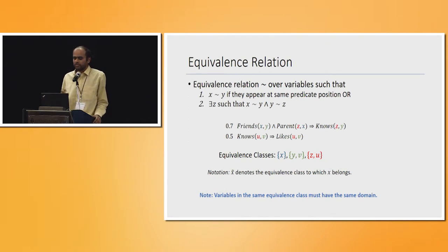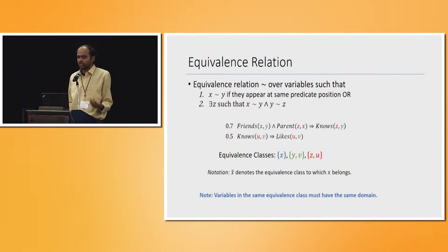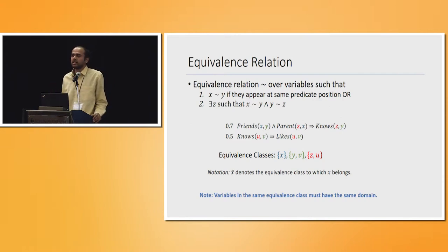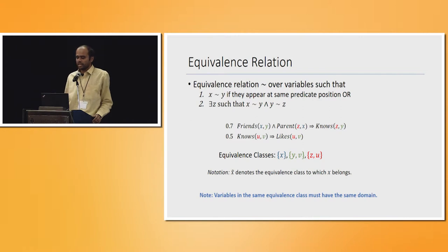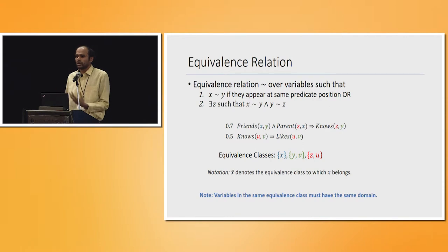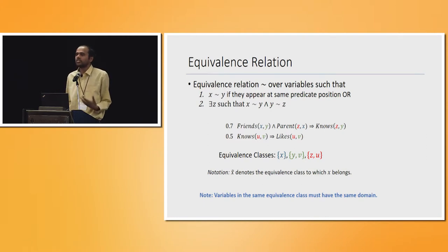Before the main part of the talk, I define an equivalence relationship between variables. Two variables are related by the tilde relationship if they appear at the same predicate position, or transitively — if Z is related to both X and Y, then X and Y are also related. Intuitively, all variables in the same equivalence class share the domain. In our example, the equivalence classes are {X}, {Y, V} — because Y appears as the second argument of knows and V also appears as the second argument of knows — and {Z, U}.